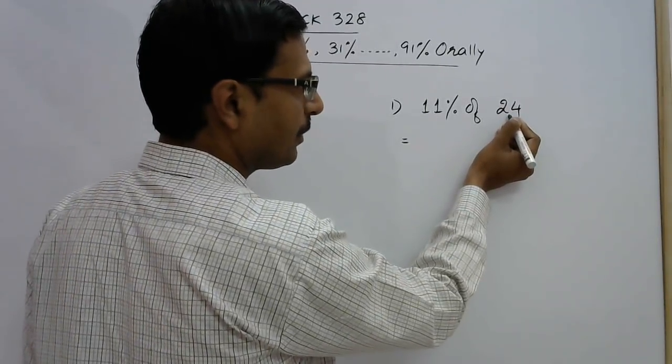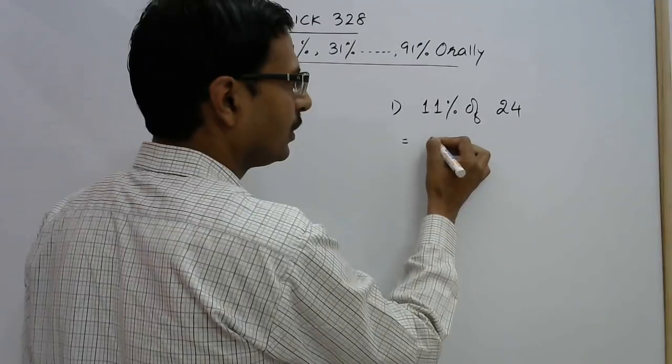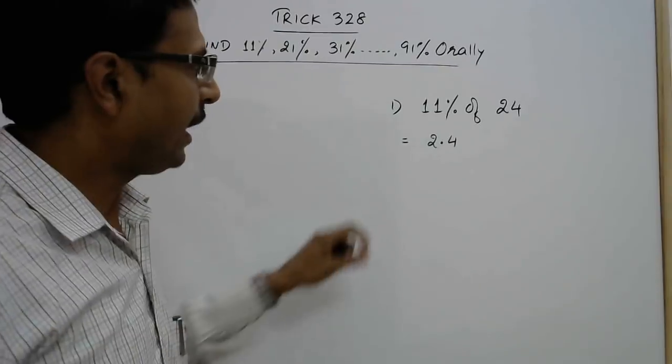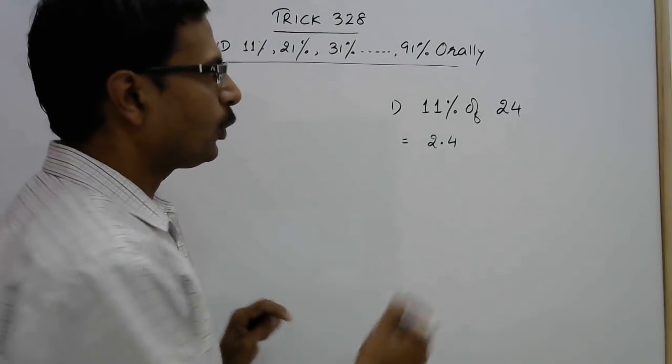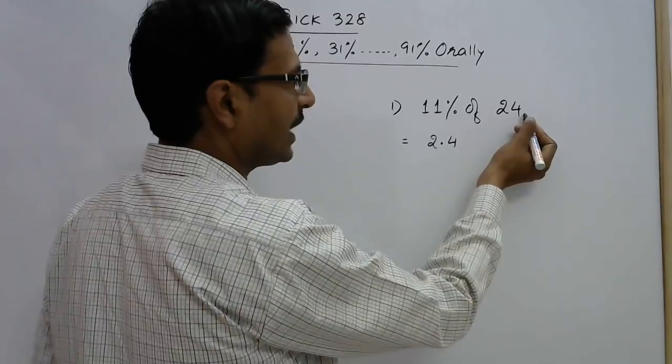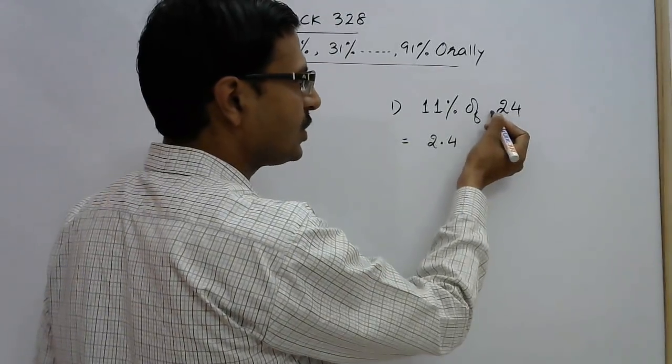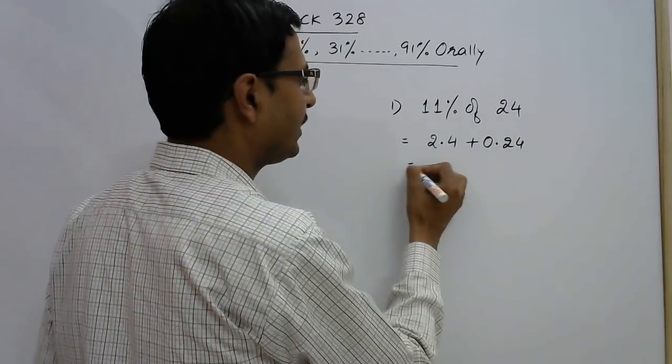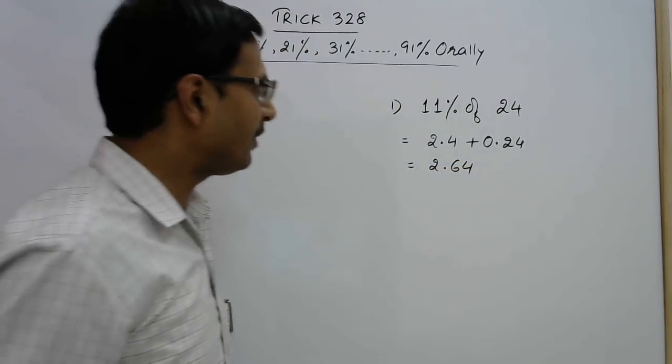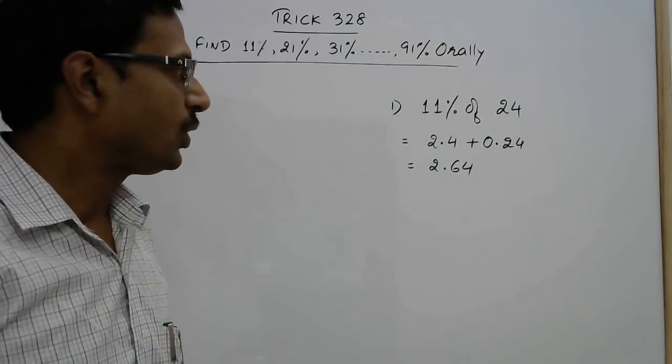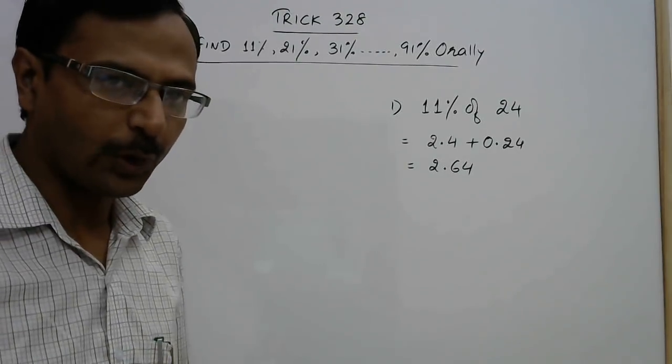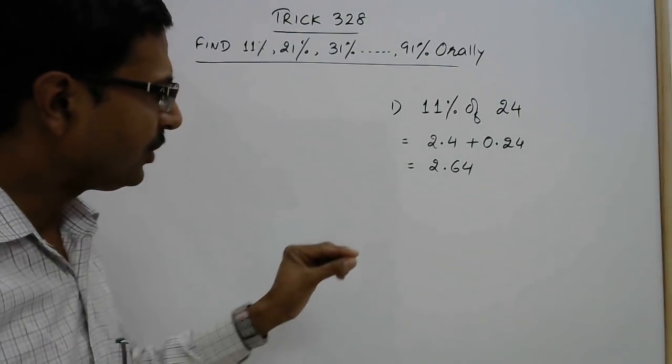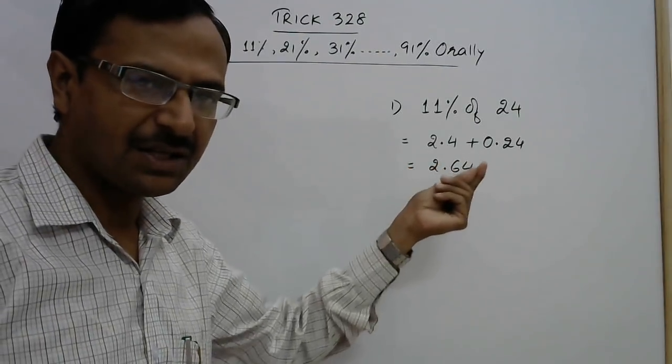And after having found out this, put a decimal two digits from the right side, that is 0.24, and add the two numbers. You will get the answer to your question. 11 percent of 24 is 2.64. Isn't that easy? And using a simple addition, mental addition, you can find that percentage without any division, without any complex multiplications.